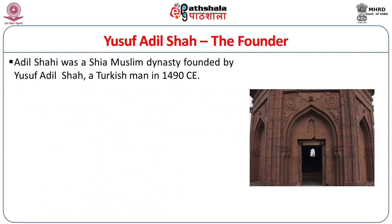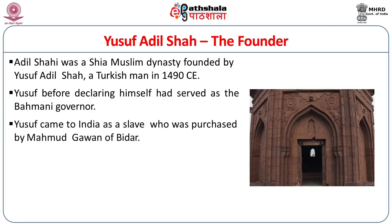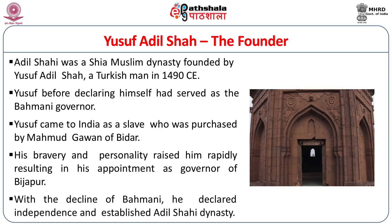Yusuf Adil Shah, a Turkish man and Shia Muslim, founded the Adil Shahi dynasty in the 1490s. Before declaring himself king, he had come to Bidar, the capital of the Bahmani dynasty in Karnataka, where he was purchased as a slave by Mahmood Gavan, the prime minister and governor of Bijapur. Due to his brave personality and skills, he soon became governor of Bijapur. When Bahmani rule declined, Yusuf Adil Shah declared himself the new king and established his capital at Bijapur.